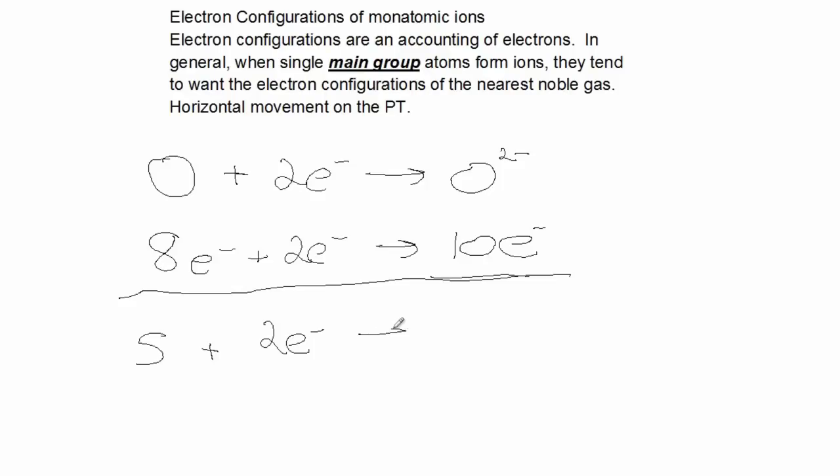To form the sulfide anion with 2 negative. So sulfur has 16 electrons. Plus the two it picks up from some other atom.